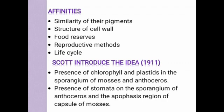In 1911, Scott introduced the idea of evolution of bryophytes from algae, based on the presence of chlorophyll and plastids in the sporangium of mosses and Anthoceros, and the presence of stomata on the sporangium of Anthoceros and the apophysis region of the capsule of moss.